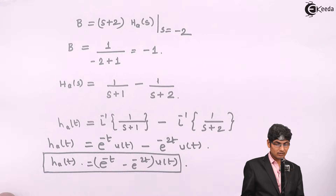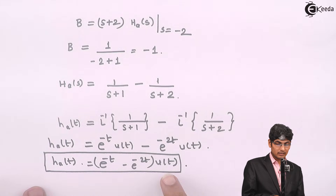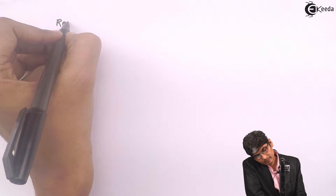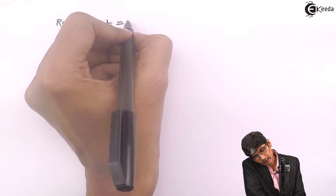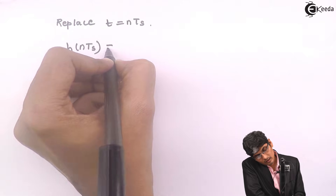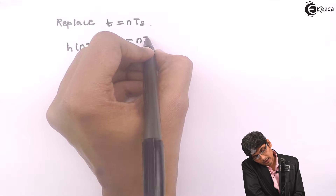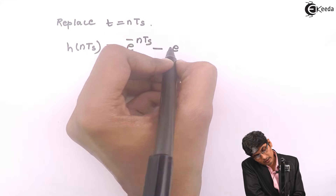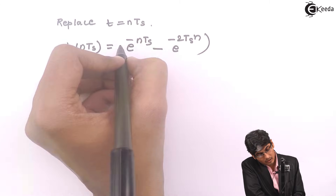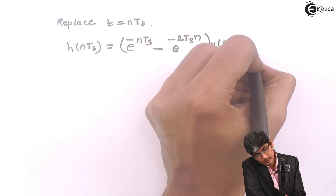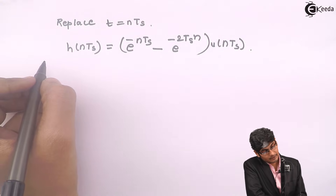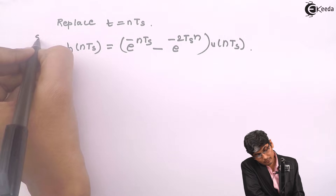After finding H_A(T), I need to replace T with NTs. So the next step is to replace T with NTs. We get H(NTs) = (e^(-NTs) - e^(-2NTs))·u(NTs). This was step 2, which is sampling.